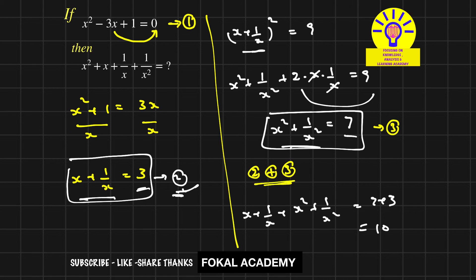So when you add x² + 1/x² plus x + 1/x, it equals 10. So the required value is 10, and this is the process of simplification.